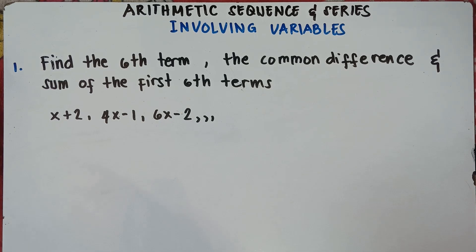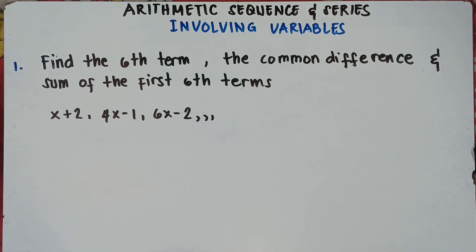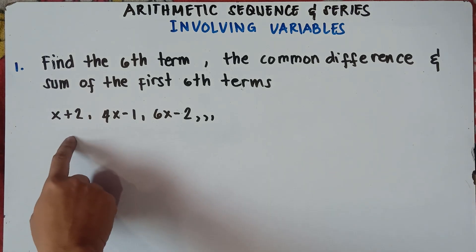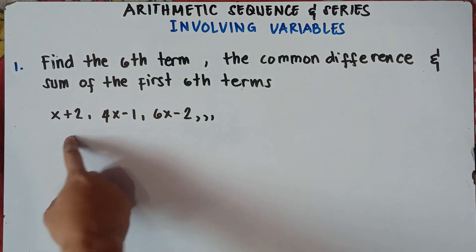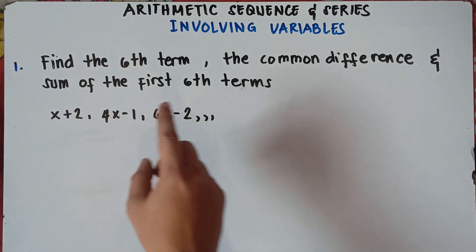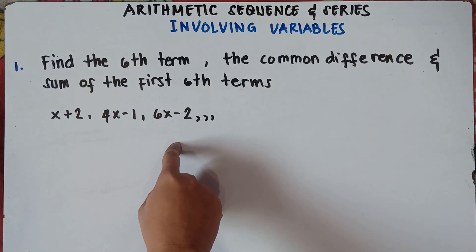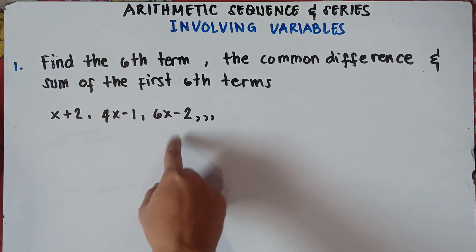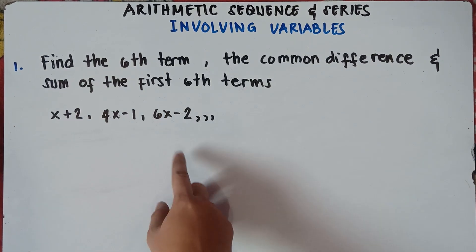So the question here: find the sixth term, the common difference, and the sum of the first six terms. The first term is x plus 2, the second term is 4x minus 1, and the third term is 6x minus 2.